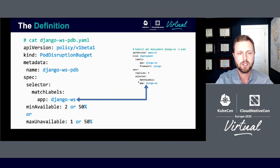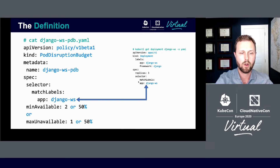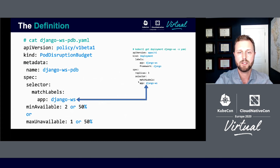The definition looks like this. First, we have our spec selector match label, which is app Django WS. You can see how this corresponds to our deployment selector of app Django WS. Then we have our min available — or conversely our max unavailable — setting. This can be an integer or a percentage. When dealing with percentages, if the number of pods is not an even number, it automatically gets rounded up to the nearest whole integer.